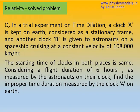Hello, let's look at a solved problem on time dilation. So we have a stationary observer on Earth having a clock A, and we have some astronauts moving on a spaceship at a constant velocity of 108,000 kilometers per hour.